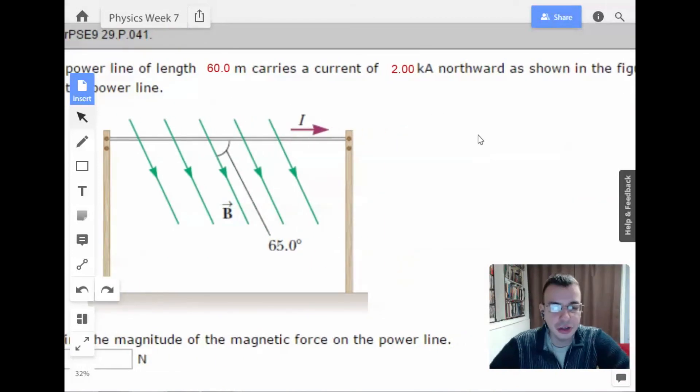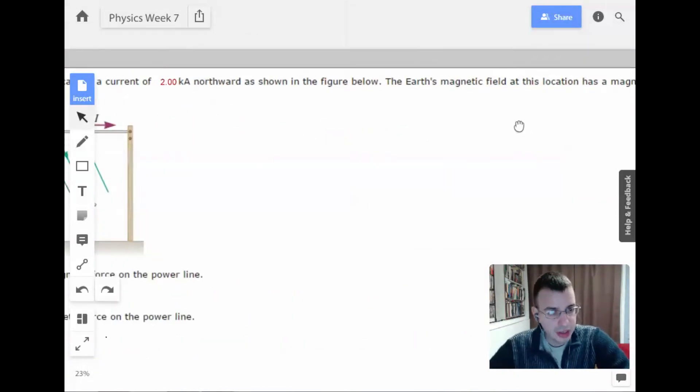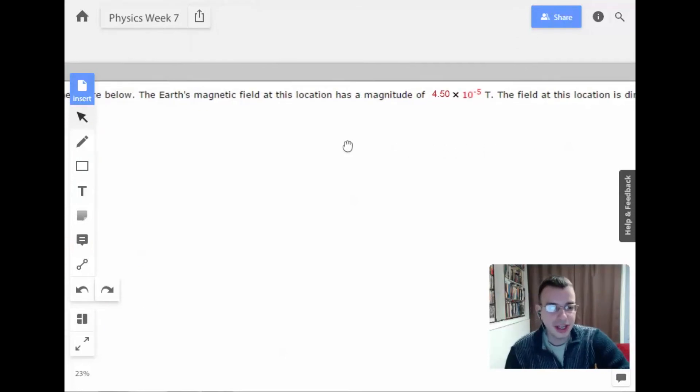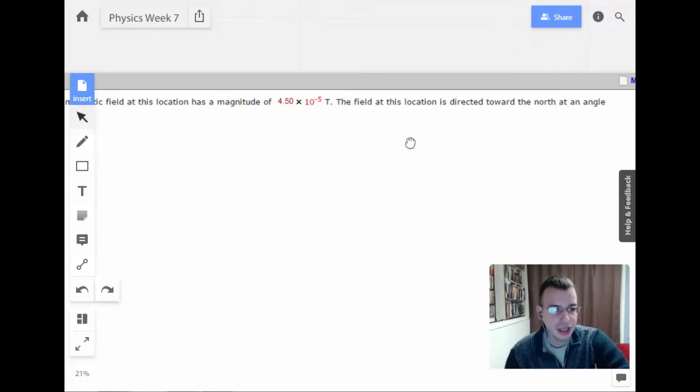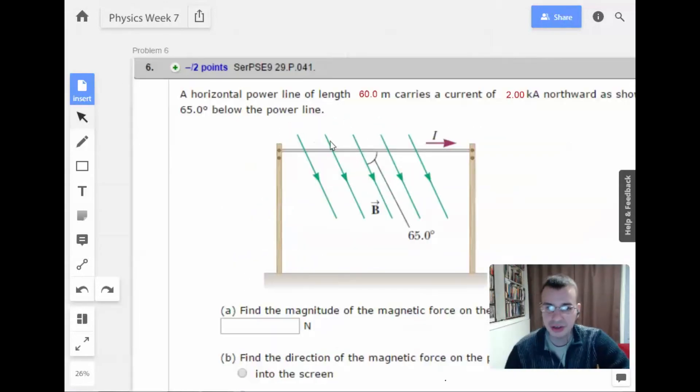carries a current of 2 kiloamps northward, as shown in the figure below. The Earth's magnetic field at this location has a magnitude of 4.5 times 10 to the negative 5th Tesla. The field at this location is directed toward the north at an angle of 65 degrees below the power line.